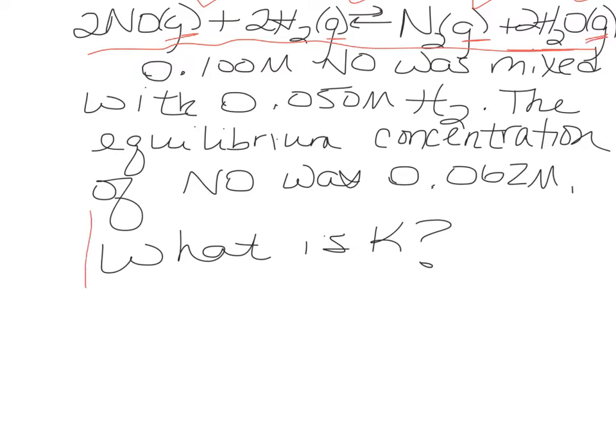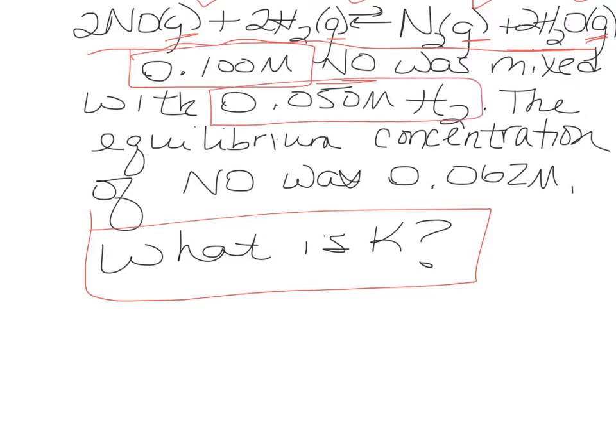So this problem is asking what the equilibrium constant is. It gives you the initial concentration of both reactants, and it gives you the equilibrium or final concentration of one of the reactants. So the first thing I usually do is set up the expression for the equilibrium constant. That will get you partial credit, just setting up the generic expression for it without any numbers actually plugged in.